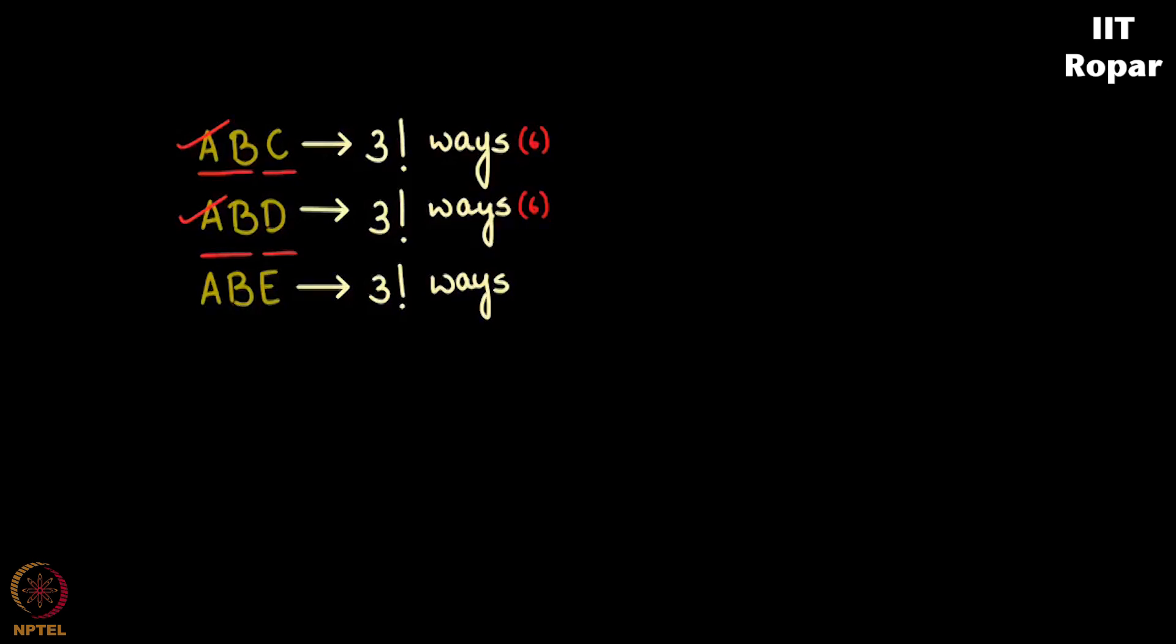Now next, what is the immediate next possibility? Let me think. So I'll start with B, C, D, three factorial ways. B, C, E, three factorial ways.